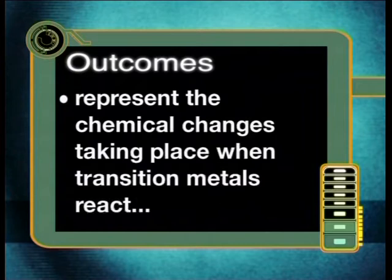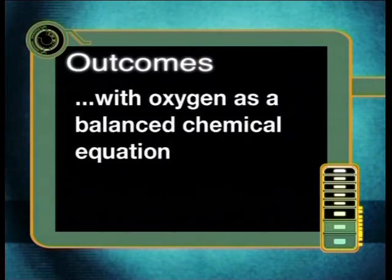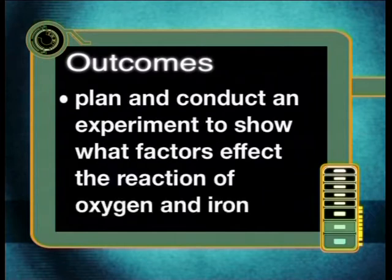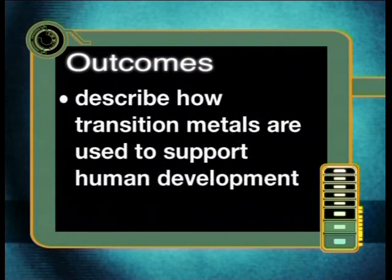By the end of this lesson, you should be able to represent the chemical changes taking place when transition metals react with oxygen as a balanced chemical equation, plan and conduct an experiment to show what factors affect the reaction of oxygen and iron, and describe how transition metals are used to support human development.